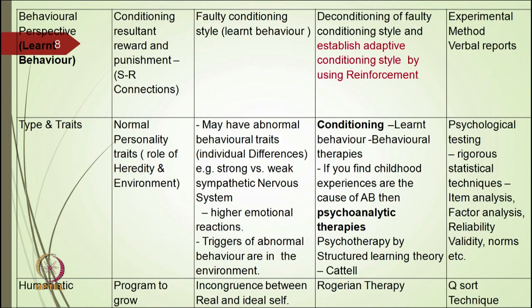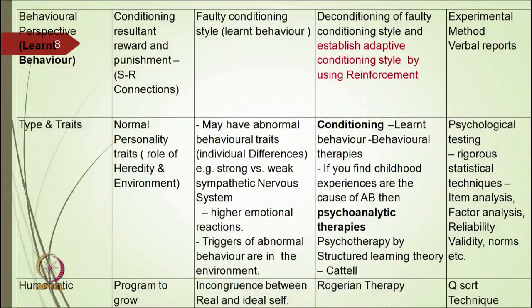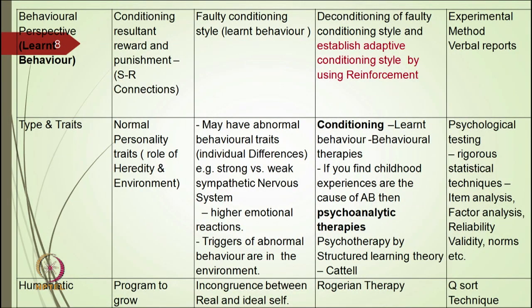Another perspective is the humanistic perspective, which is very important as the historical background of positive psychology. Normal behavior as per this school means we are programmed to grow. Abnormal behavior occurs when there is incongruence between the real and ideal self. Rogers proposed Rogerian therapy to treat abnormal behavior, and their technique is the Q-Sort technique, which will be discussed later in detail.